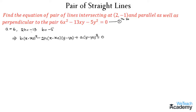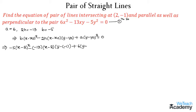By substituting all these values as well as x0 and y0 in this formula, we get: b which is -5 into (x - 2)², minus 2h which is -13 into (x - 2)(y - (-1)), plus a which is 6 into (y - (-1))² = 0. Now let us use the formula of (a - b)².